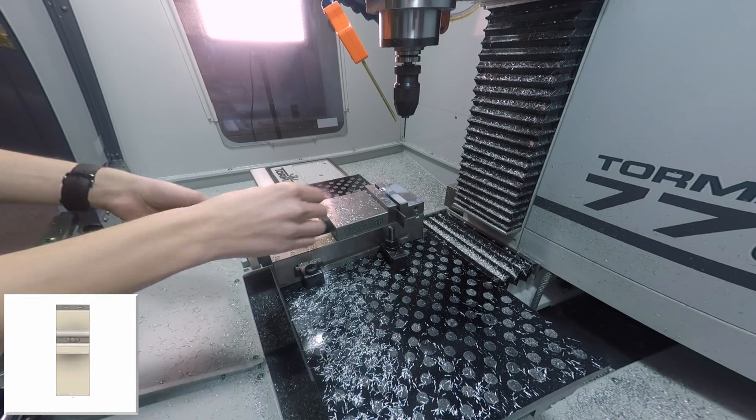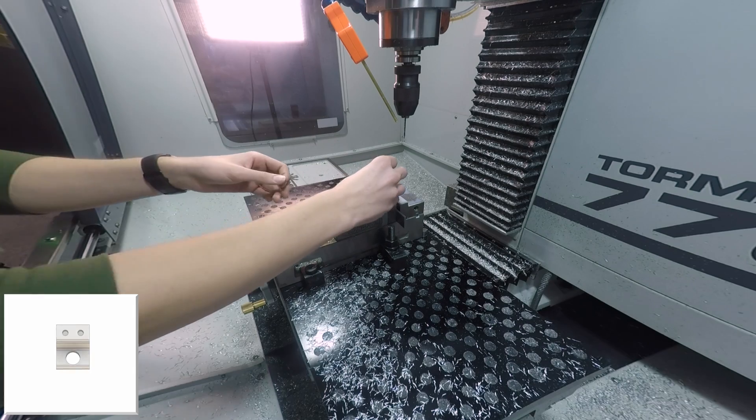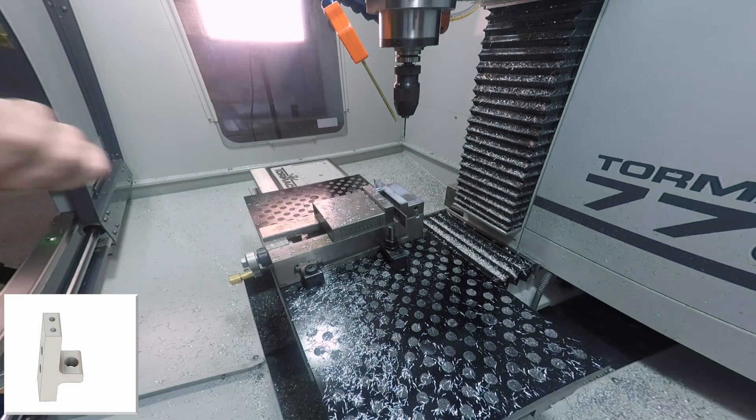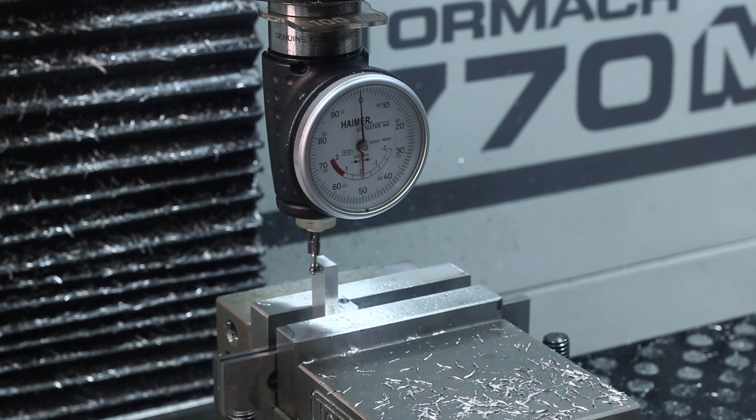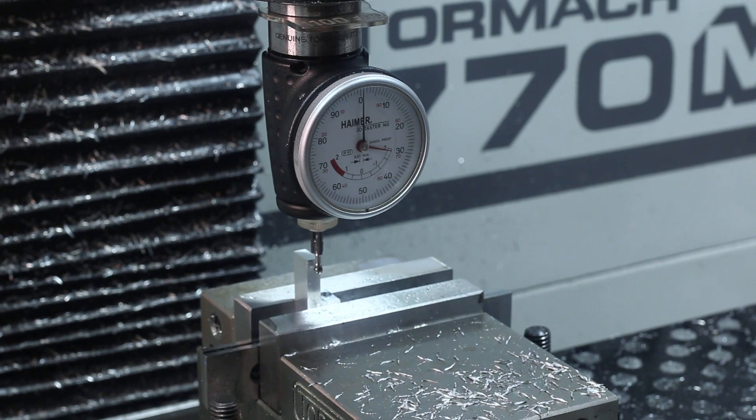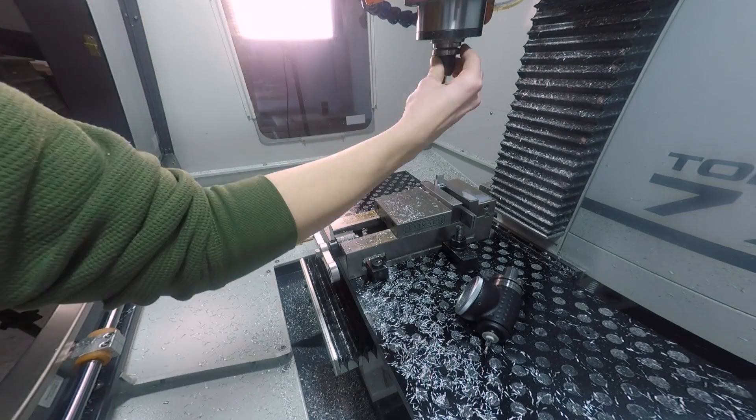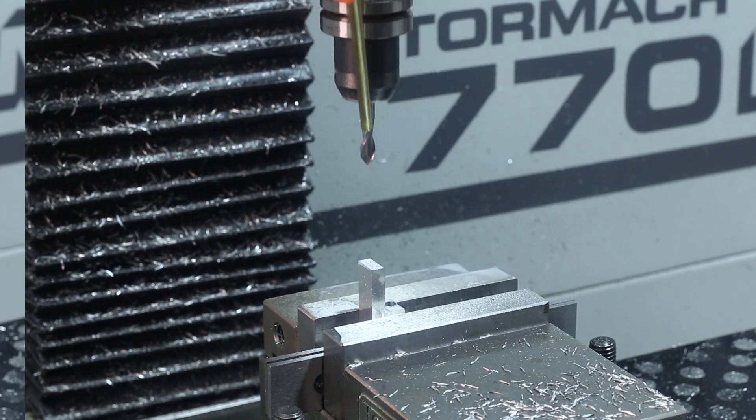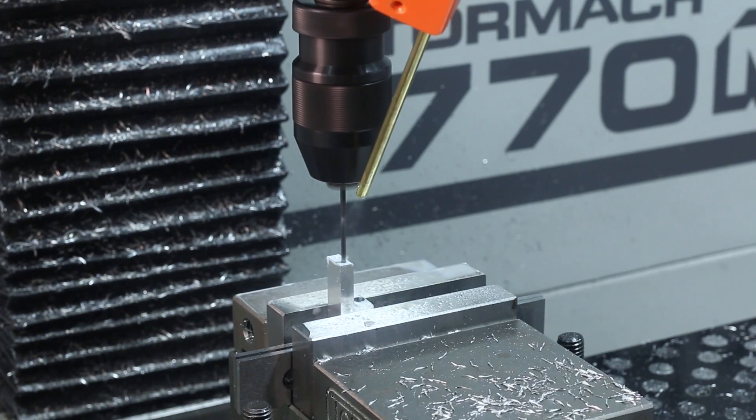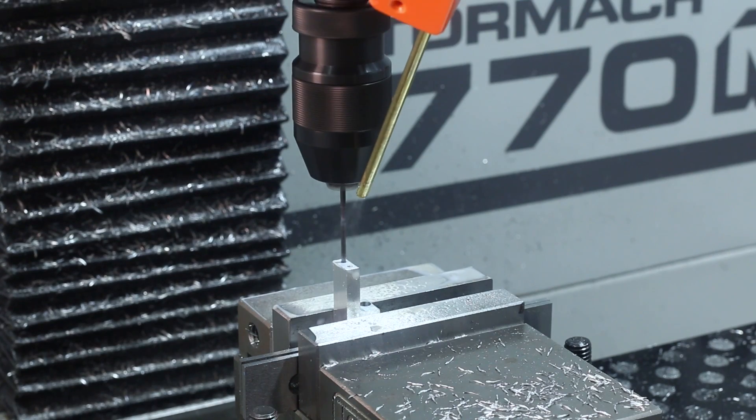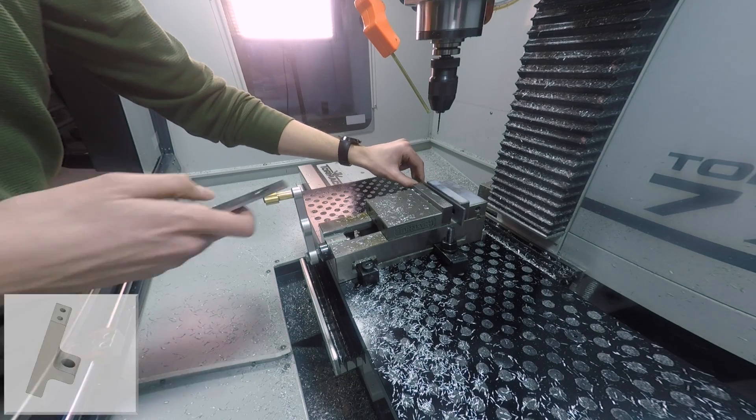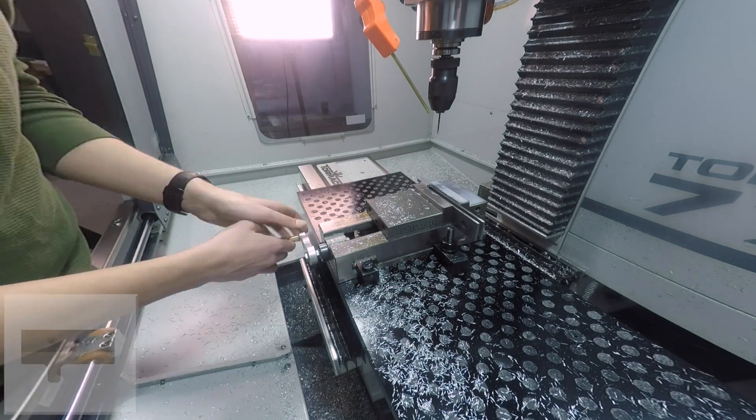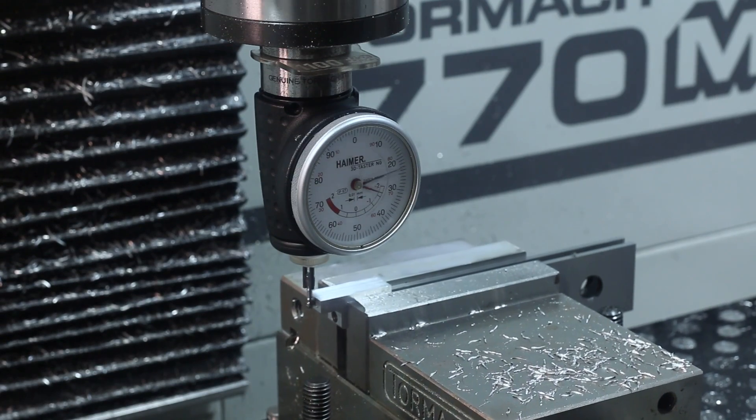Same process here for op 4 except we're going to rotate the part 90 degrees just because there's not quite enough material to hold onto under that L shaped lip anymore. Back to the same parallels we used before and just like we did in op 1 we're going to hang this part off of the left side of the vise to avoid having to clamp on just that L shaped extrusion.